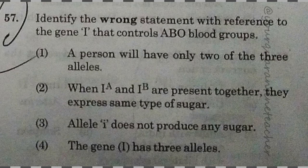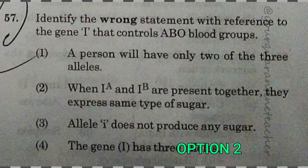57th question: identify the wrong statement again. The answer is option 2 — when IA and IB are present together, they express the same type of sugar. That is the wrong statement, so option 2 is the correct answer.